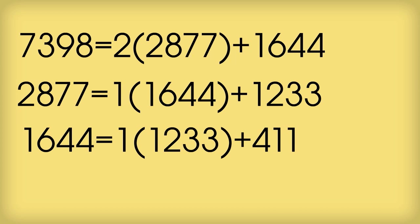Now let's repeat it again. At every stage the remainder is going down. It's getting smaller. So the next line is 1644 equals 1 times 1233 plus 411.